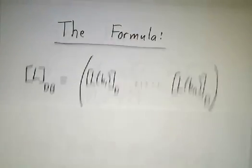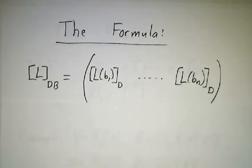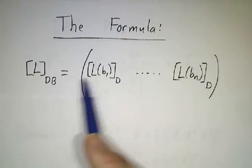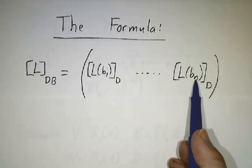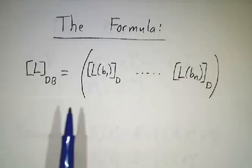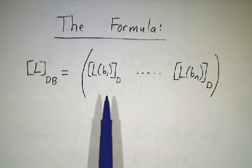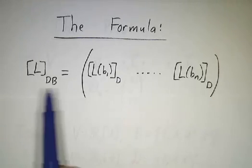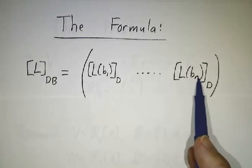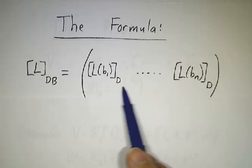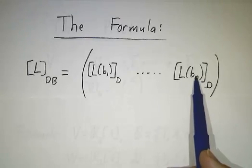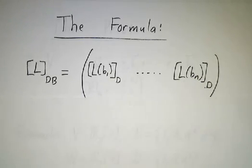Here's the formula. This matrix that converts inputs in B to outputs in D — you get it by applying L to B1, B2, ..., Bn, and then taking the coordinates of those in the D basis. If you remember, when we had something going from Rn to Rm, we got the matrix by applying L to the standard basis vectors E1 through En, and we didn't bother taking coordinates because it was already in Euclidean space. Now we have to use the basis vectors B1 through Bn instead of E1 through En, and we have to take coordinates — but it's really the same formula.